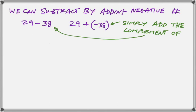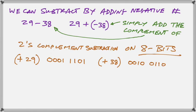In the last video we showed you how to do your negative numbers. So let us do a 2's complement subtraction on 8 bits. First we write down the two numbers, 29 and 38.